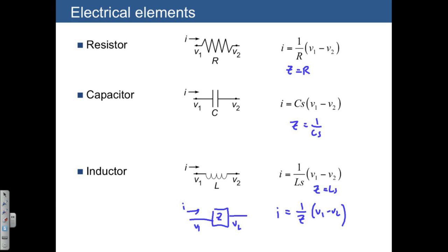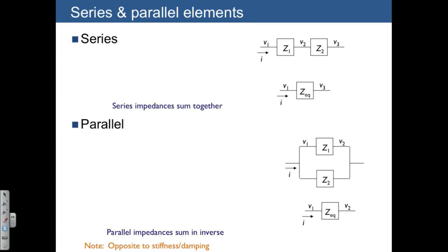So if you put those together, then the impedance for each of the elements, we can all treat in exactly the same way, using I equals 1 over Z times V1 minus V2. So there's some simple things we can immediately do with the concept of impedance.